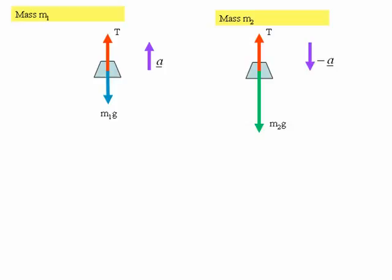Now the free body diagram for the other mass, m2, is a similar situation. We have the force of gravity acting downwards — m2g in this case — and the tension in the string acting upwards.